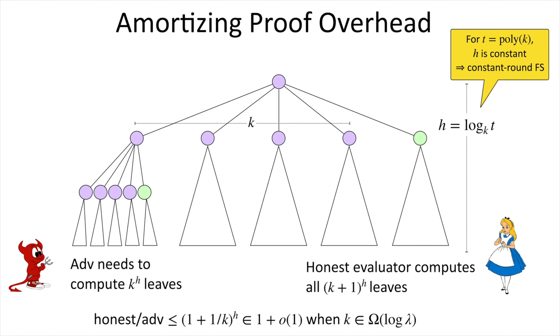So that's our construction in a nutshell. Some things I didn't touch on are, for example, how to generalize Pietrzak's two-for-one trick into a K-for-one trick, which we do in this paper, and some other more technical details. So see the paper if you're interested.